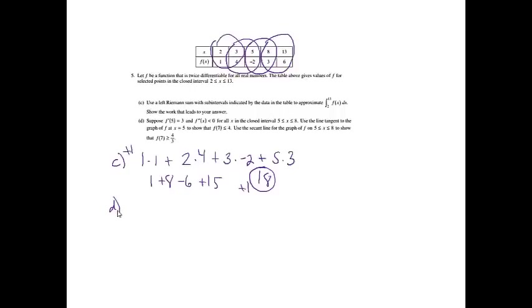Part D is the fun one. Suppose f prime of 5 equals 3, and f double prime of x is less than 0 for all x in the closed interval 5 to 8. Use the line tangent to the graph of f at x equals 5 to show that f of 7 is less than or equal to 4, and use the secant line for the graph of f on 5 to 8 to show that f of 7 is greater than or equal to 4 thirds.